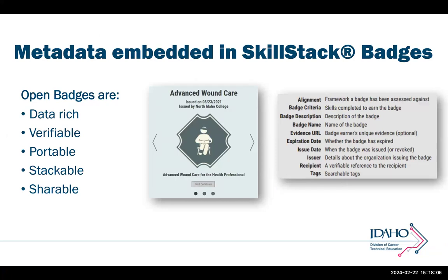Within the badges themselves — looking under the hood — is the metadata. Open badges are data-rich, verifiable, portable, stackable, and shareable. Underneath these badges is the badge criteria, description, name, attached evidence, expiration date, issuer, issue date, and more. So it's not just an image — there is actual content included within these digital badges when they're shared and earned.